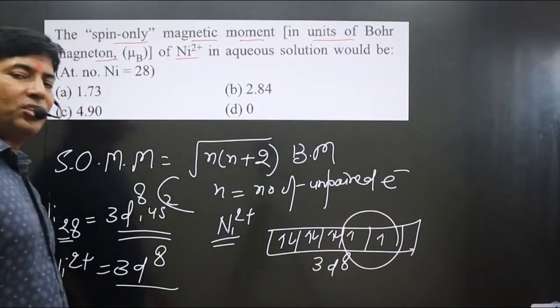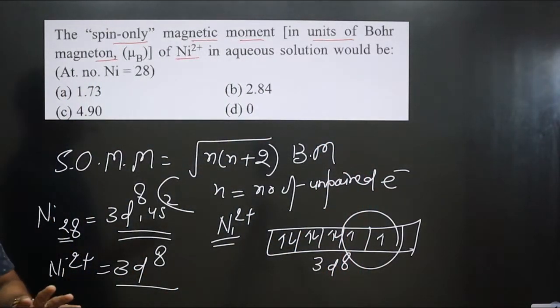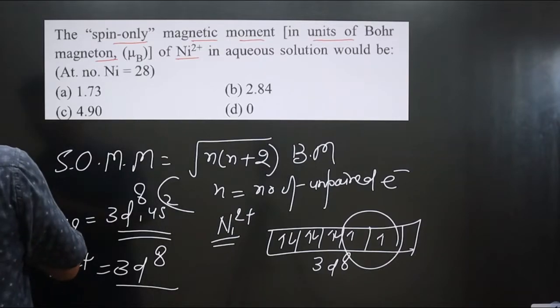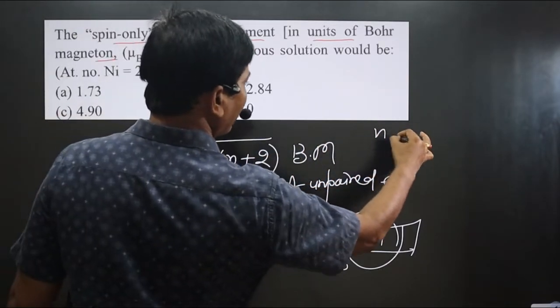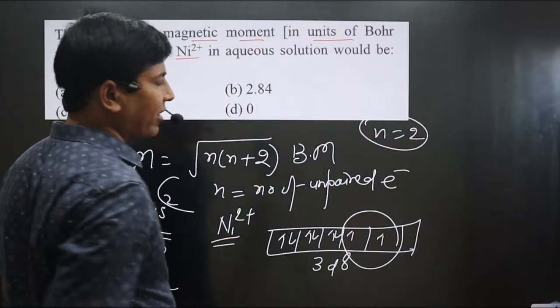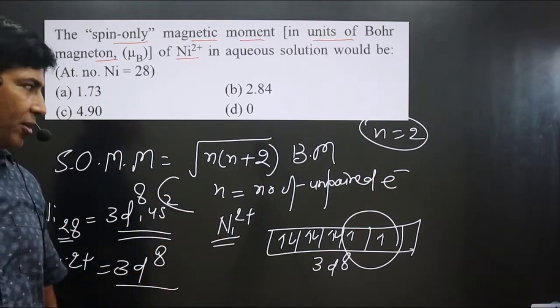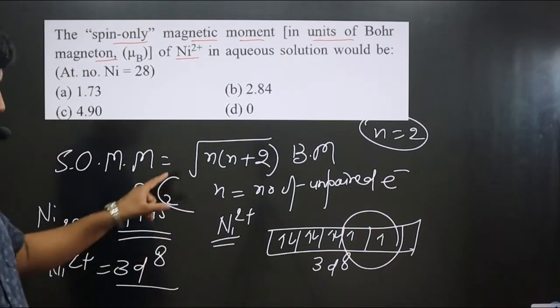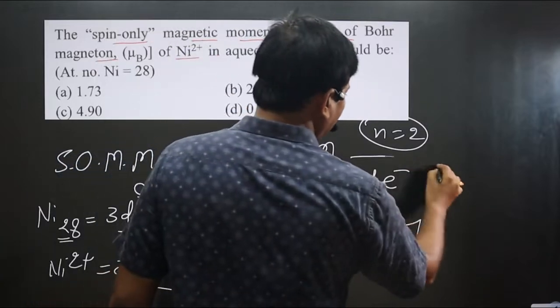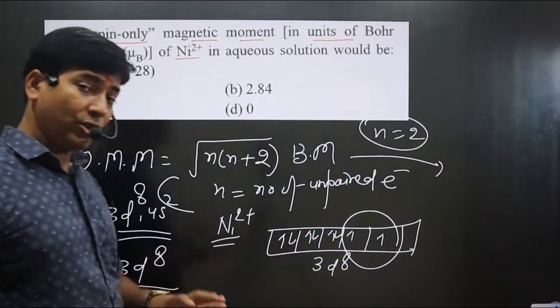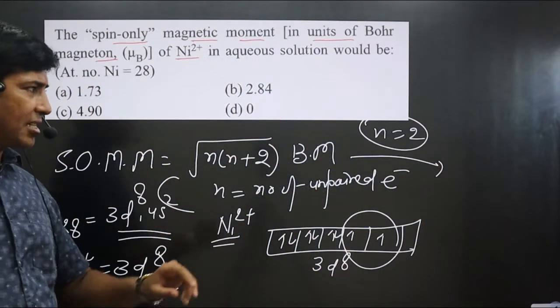Total number of unpaired electrons: 2 are there. Means we got n value. We got n value, and n value is 2. n value 2 for nickel 2 plus. Two unpaired electrons are there. Now pay attention carefully. If you calculate here, n value is 2, so keep in mind you don't need to do the calculation here.